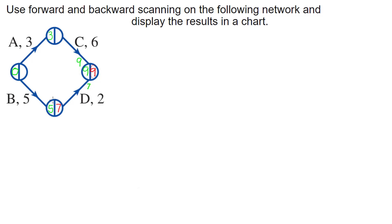The earliest I can start D is minute five, but I can wait until minute seven to start D. For C: nine minus six gives me three. Again, we have two paths meeting at a single node, so we write results on the path. Continuing back: three minus three gives zero for the A path, and seven minus five gives two for the B path.